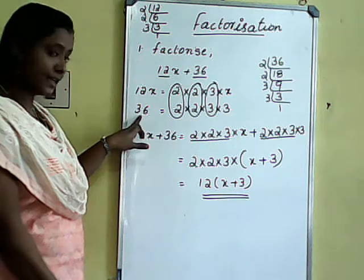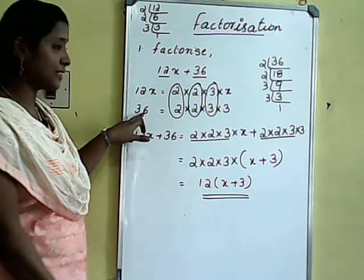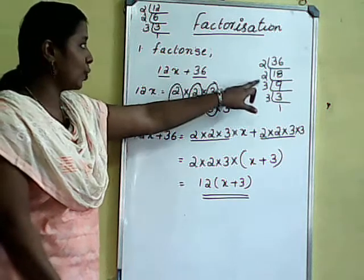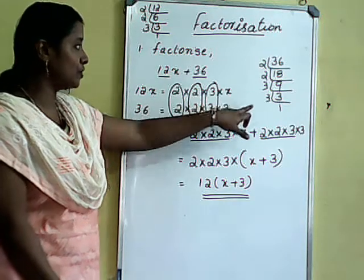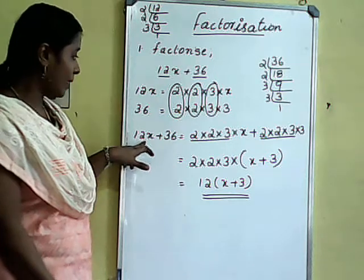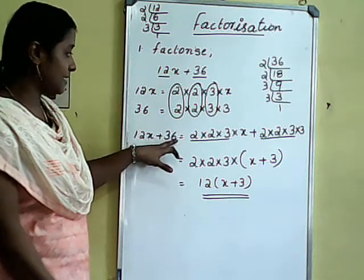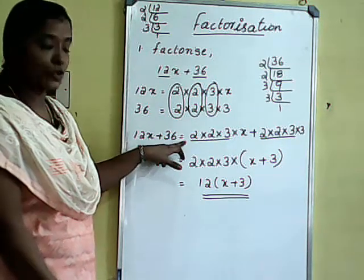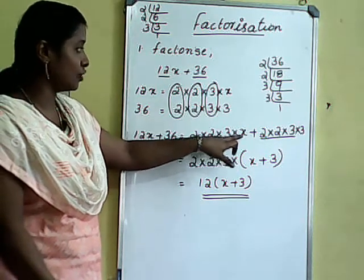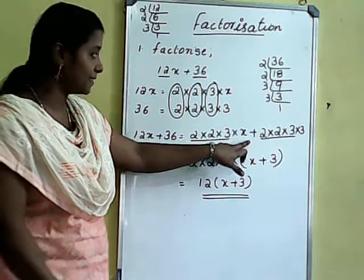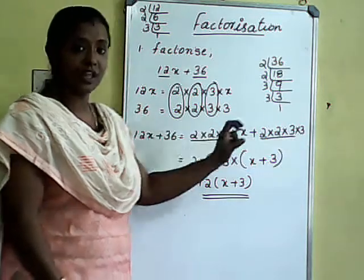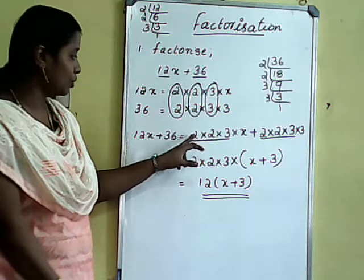Then the next one: 36. Again, we want to express 36 as a product of primes. That means 2 into 2 into 3 into 3. Now combine: 12x plus 36 equals 2 into 2 into 3 into x, plus 2 into 2 into 3 into 3. How many factors are common?